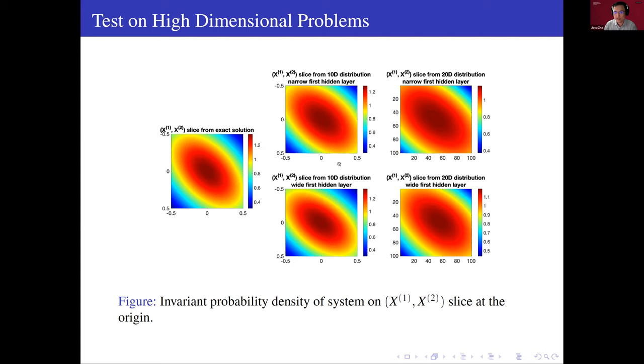But to improve it, we can just add more neurons in the hidden layers of the neural network. And of course, the result is improved. Thank you. This is all for this lecture.